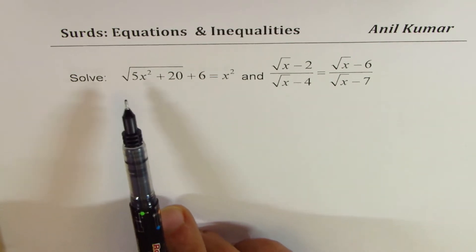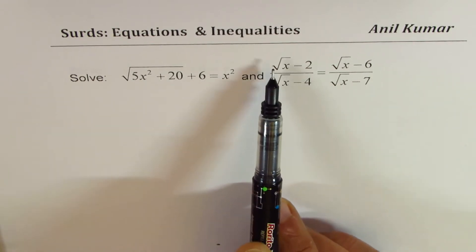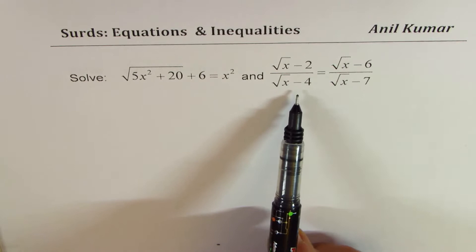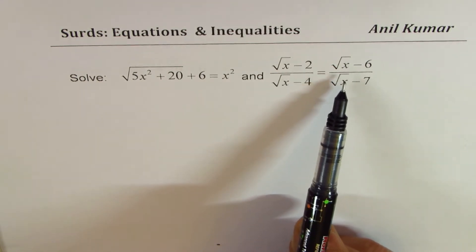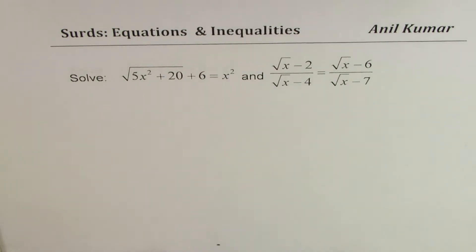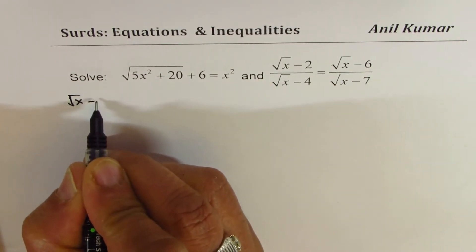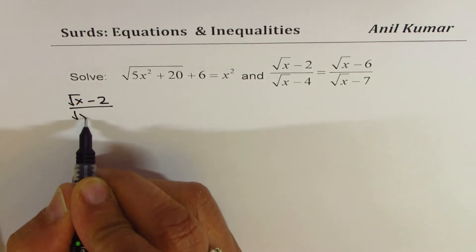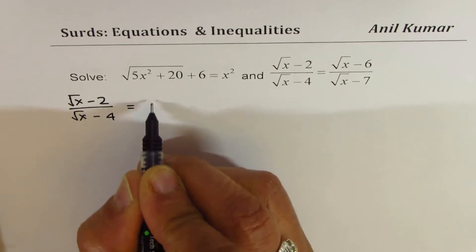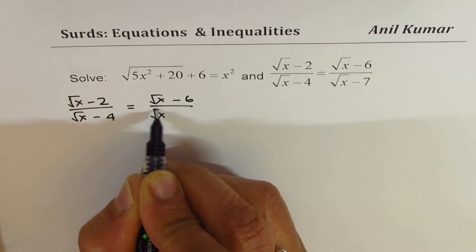The first equation is: square root of (5x² + 20) + 6 = x². The second one is: √(x − 2) / √(x − 4) = √(x − 6) / √(x − 7). Both questions are very different as far as the solution is concerned, so I'll take them one by one — I'll start with the second one first.